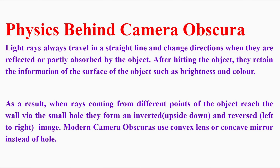Now let's see what is the physics behind camera obscura. Light rays always travel in a straight line, but they change direction when reflected or partly absorbed due to obstacles in their path. After hitting the object, they retain information about the object's surface, such as color, brightness, and more. Whenever these rays from different points of the object enter the hole to reach the other side of the wall, they form an image.